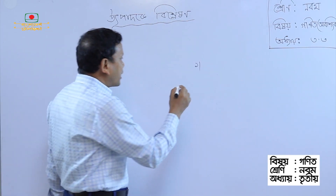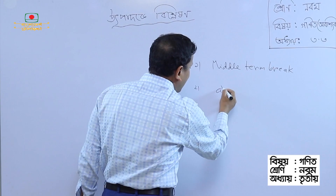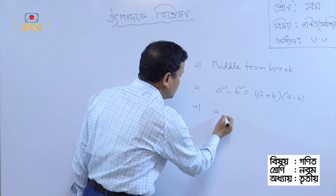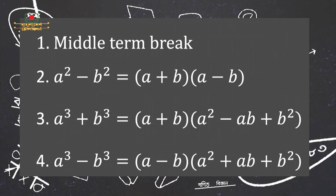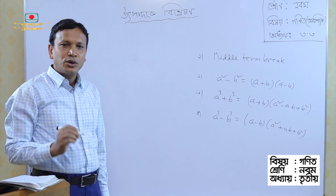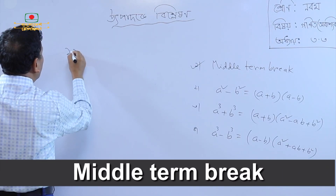Act number 1 is the middle time break. Number 2 is a² minus b², the square root formula. We know this from the 4th century, but we need to do this 3.3 chapter. First, let's take a minute break.